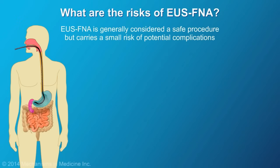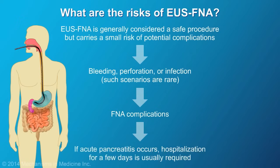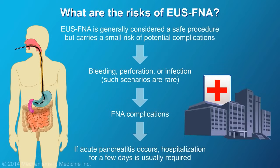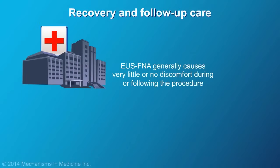While EUS-FNA is generally considered a safe procedure, it does carry a small risk of potential complications, including bleeding, perforation, or infection. More specifically, FNA complications include acute pancreatitis that may result in hospitalization for a few days. Pancreatic bleeding or infection due to tissue sampling attempts can also occur, but are very rare. EUS-FNA generally causes very little or no discomfort during or following the procedure.